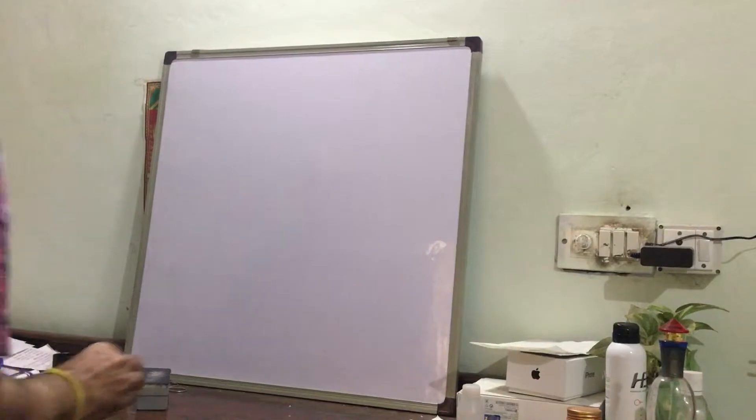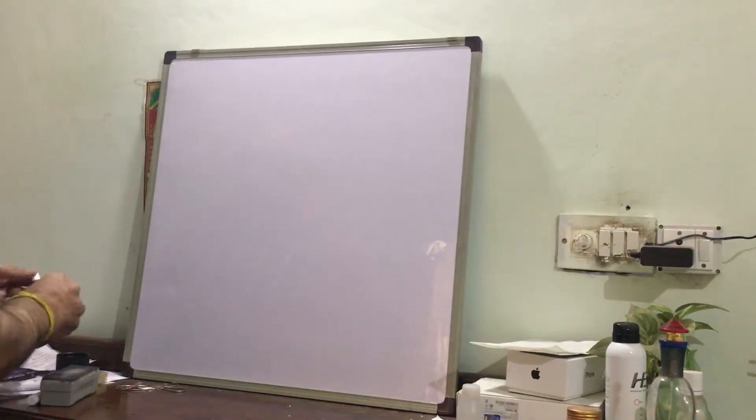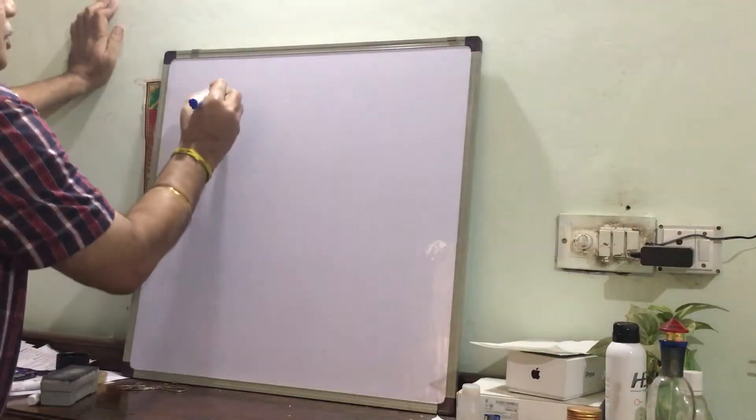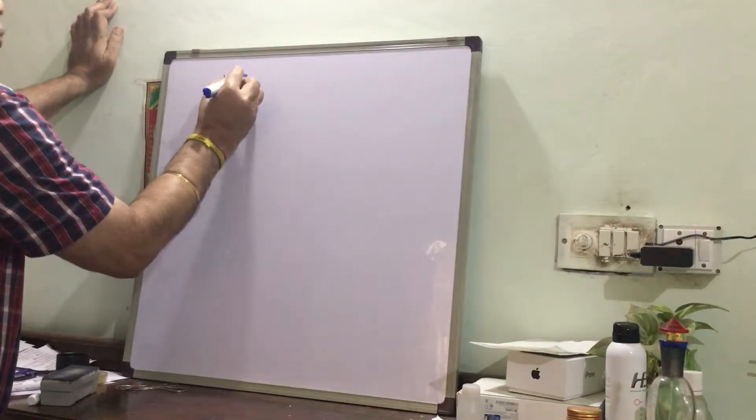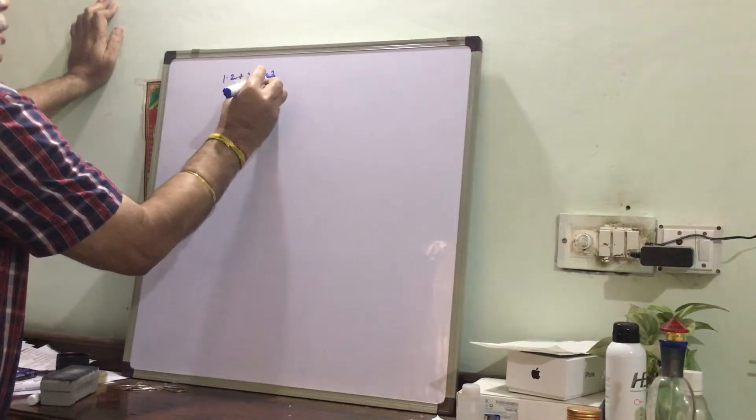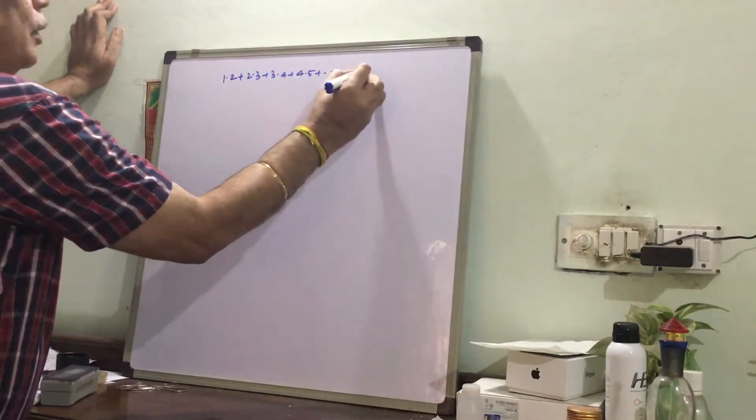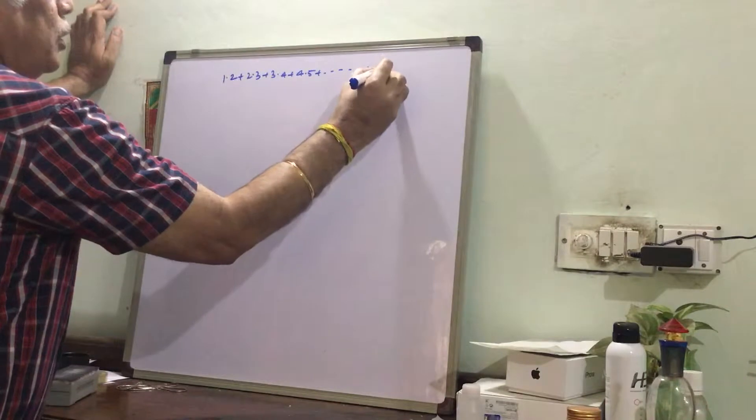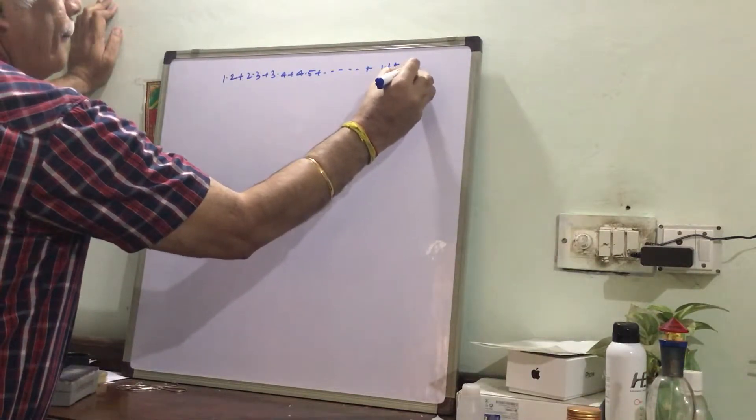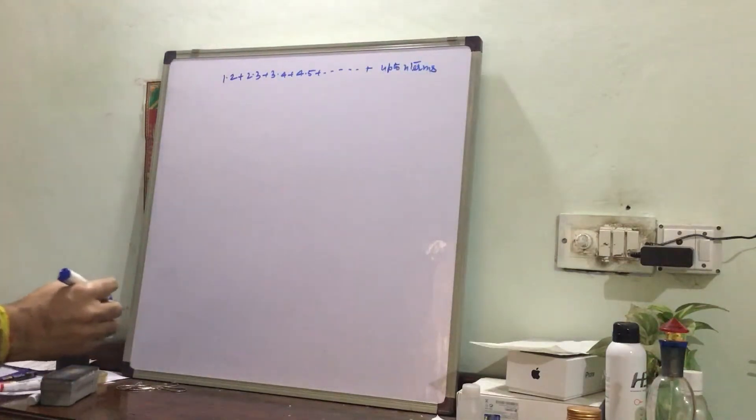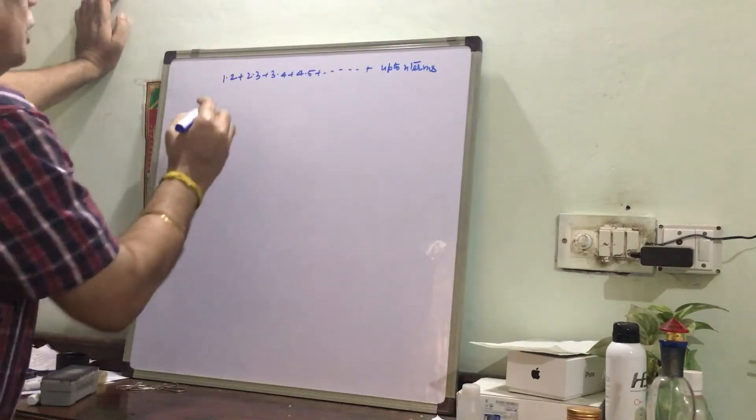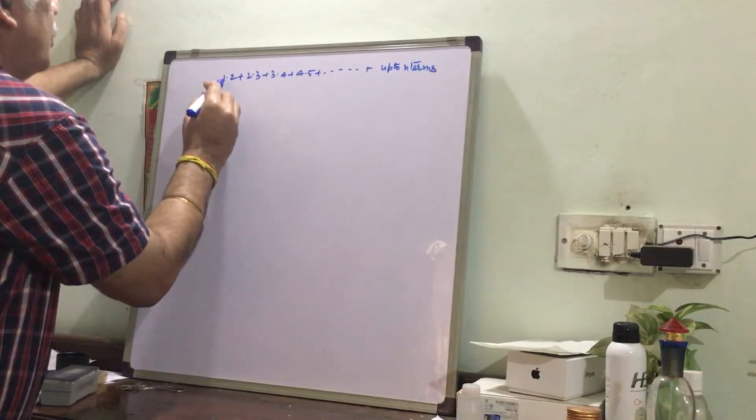Dear friends, welcome to my channel. Now the question is: find the sum of the series 1×2 plus 2×3 plus 3×4 plus 4×5 plus up to n terms. See, here in the first term we have 1, 2 and 3, 4.